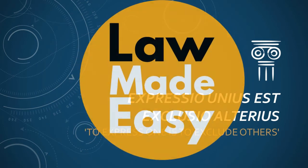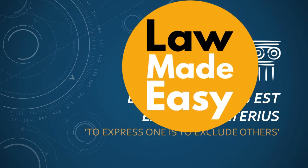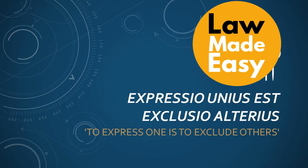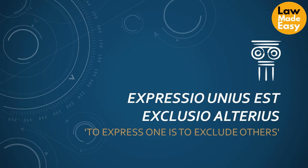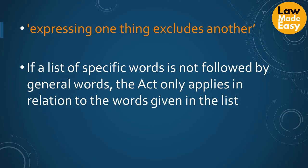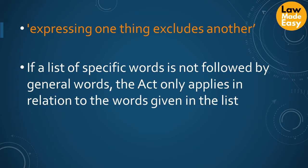In this lecture, we are going to learn about the expression expressio unius est exclusio ulterius. The expression means to express one is to exclude others. Mentioning one or more particular things may be taken to exclude others of the same kind. Expressing one thing excludes another which is not referred to. The effect of this rule means that if a list of specific words is not followed by general words, the act only applies in relation to the words given in the list.